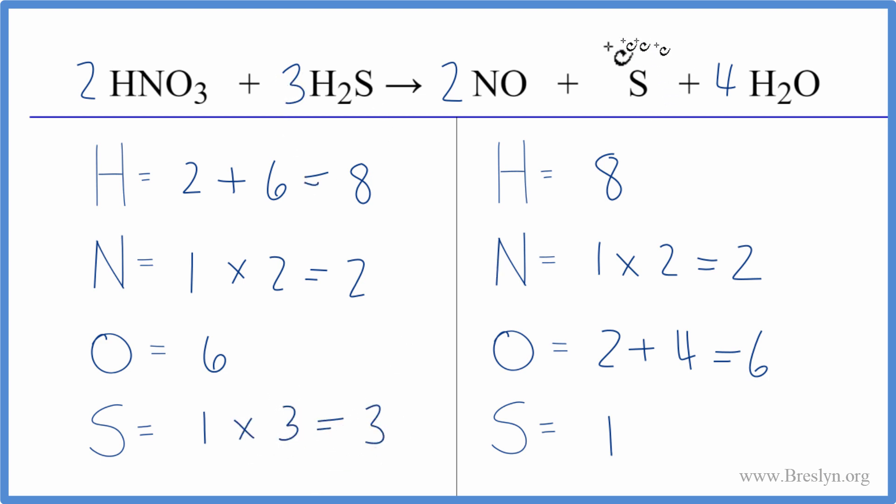But actually, that's okay. Sulfur is all by itself. So if I put a three here, one times three, that'll give me three sulfur atoms. And we have balanced this equation.